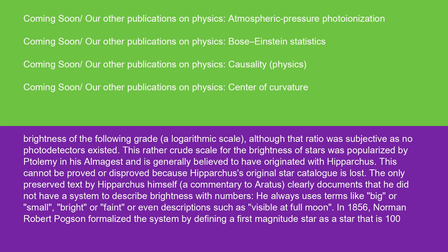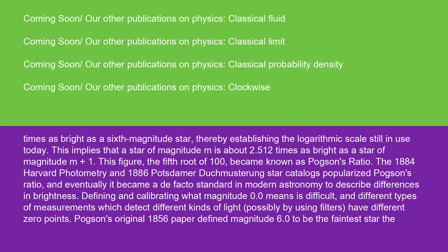In 1856, Norman Robert Pogson formalized the system by defining a first magnitude star as a star that is 100 times as bright as a sixth magnitude star, thereby establishing the logarithmic scale still in use today. This implies that a star of magnitude m is about 2.512 times as bright as a star of magnitude m+1. This figure, the fifth root of 100, became known as Pogson's ratio. The 1884 Harvard Photometry and 1886 Potsdam Durchmusterung star catalogs popularized Pogson's ratio, and eventually it became a de facto standard in modern astronomy to describe differences in brightness.